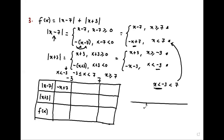Now we also have some space in between negative 3 and 7 — we still have some numbers that are less than 7. So this modulus of x minus 7 still remains negative x plus 7 for values of x less than 7 as per definition. But after 7 it becomes x minus 7. We go to the second one, the modulus of x plus 3. The modulus of x plus 3 is defined as negative x minus 3 if x is less than negative 3. Now we are dealing with x less than negative 3, so it will be negative x minus 3.